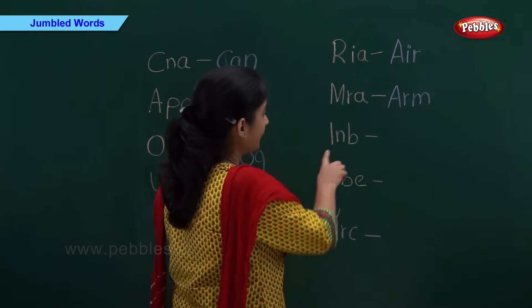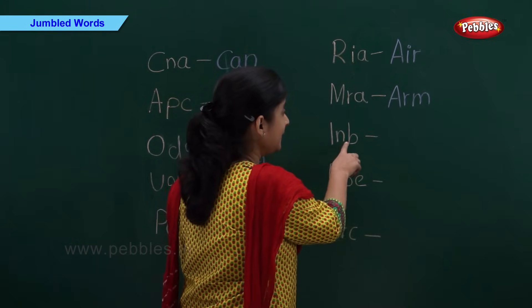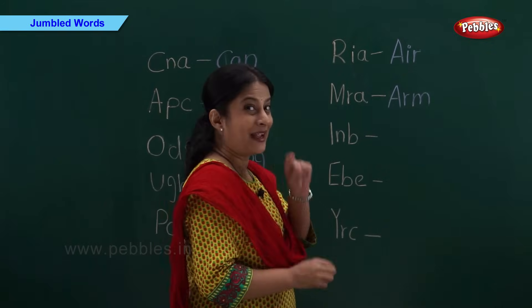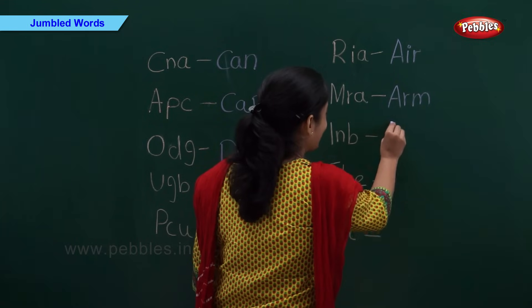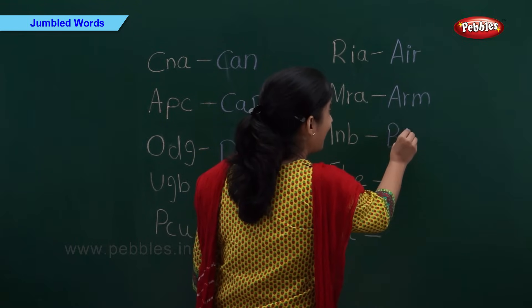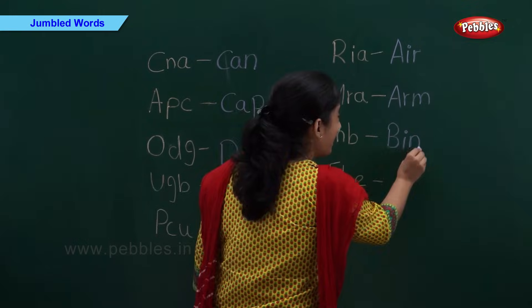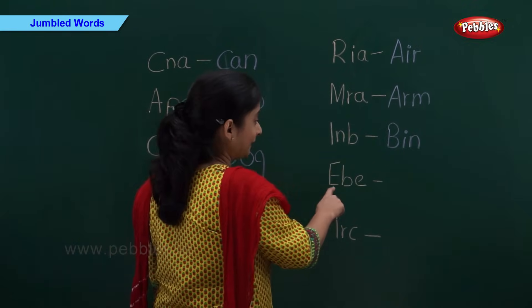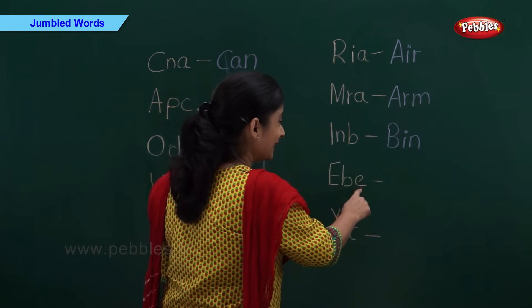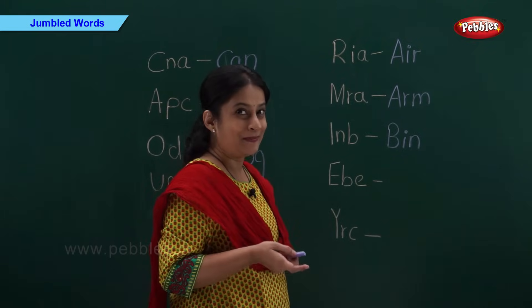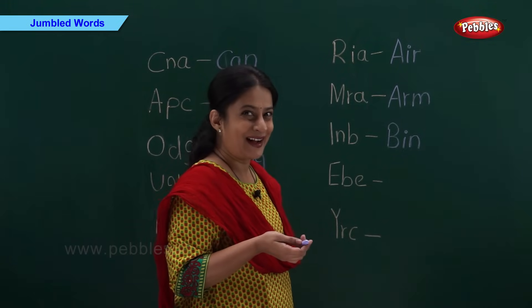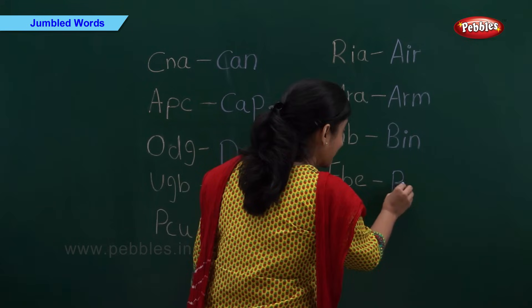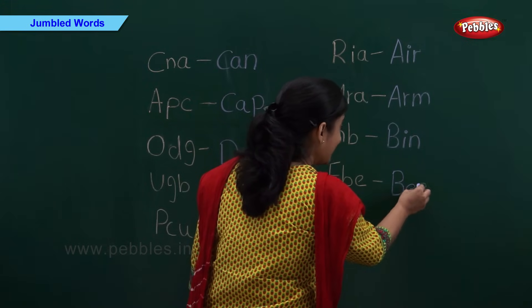And now we have I-N-B. I-N-B. Okay, I got it. B-I-N. Bin. And now we have E-B-E. Can anyone tell me? Think fast. It's B-E-E.